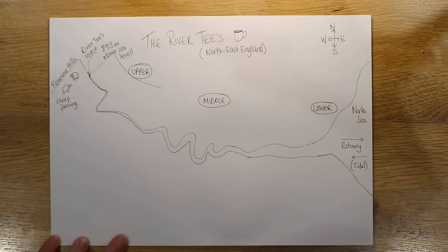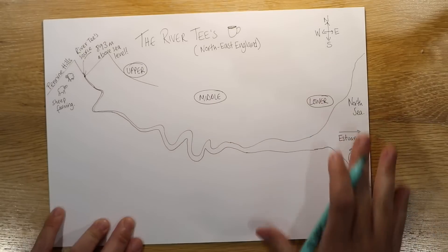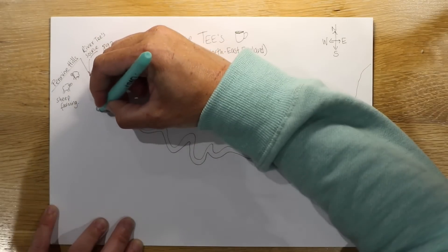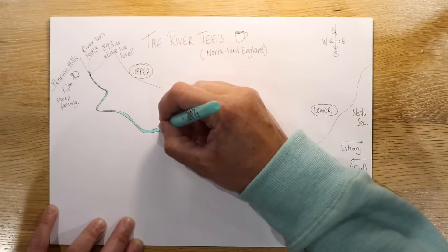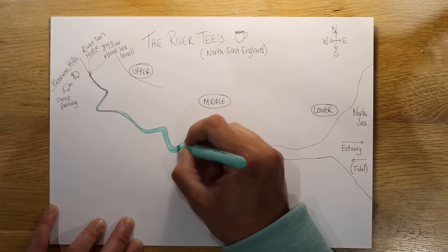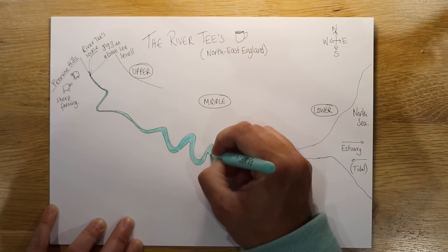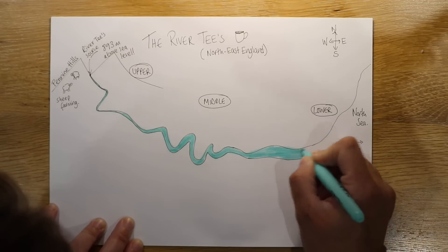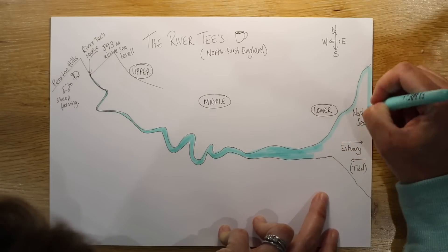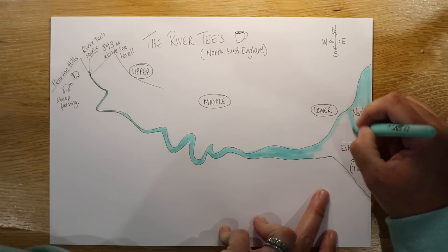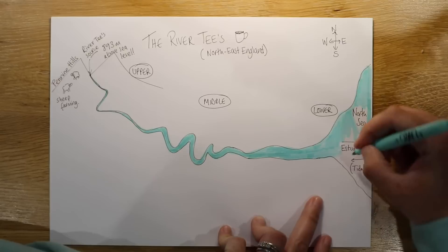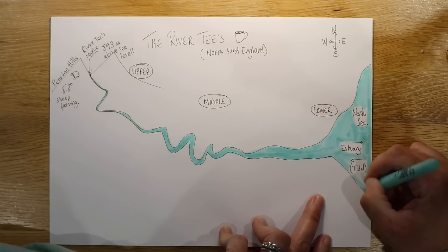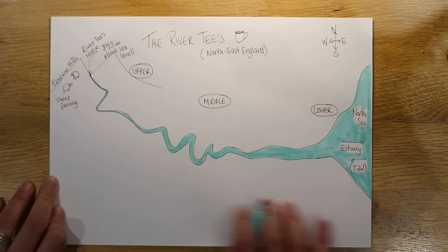Now we're going to start adding in a few things. First off, just to give it a little bit of perspective, I'm going to shade. If you've got a blue highlighter, a felt tip or a pencil, just shade in our river — it doesn't have to be perfect. I can promise you the North Sea and the River Tees is not this lovely shade of turquoise — it would be much more of a browner blue, that's for sure. But there we go, we've got our river coloured.